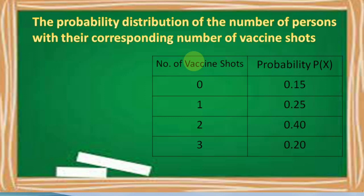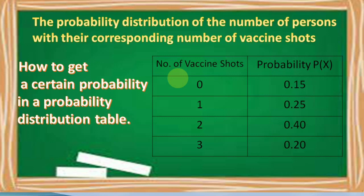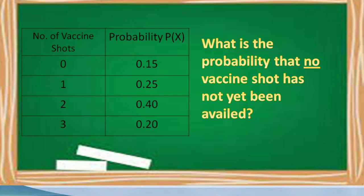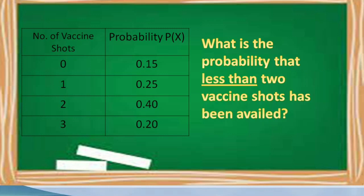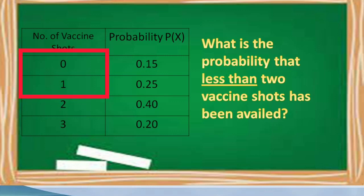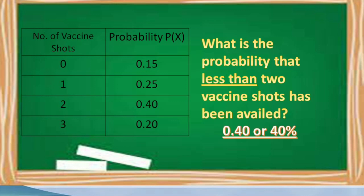We have here the probability distribution of the number of vaccine shots with their corresponding probabilities. To find the probability of a certain value, we look it up in the distribution table. For example, the probability that no vaccine shot has been availed (X = 0) corresponds to 0.15, or 15%. The probability that less than 2 vaccine shots have been availed covers values 0 and 1, so we add 0.15 and 0.25 to get 0.40, or 40%.